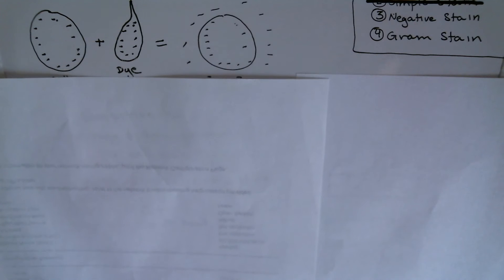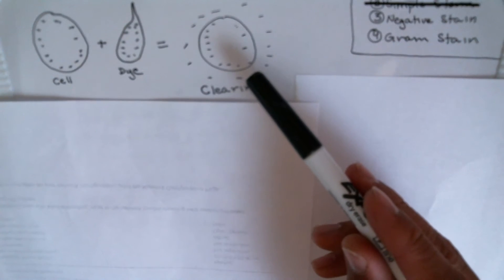The negative stain is kind of opposite to that of the simple stain, in which we have a cell that has a negative charge and we're going to use a dye that also has a negative charge. What we're going to be looking for is a clearing, and that clearing is going to show us the morphology of the cell.